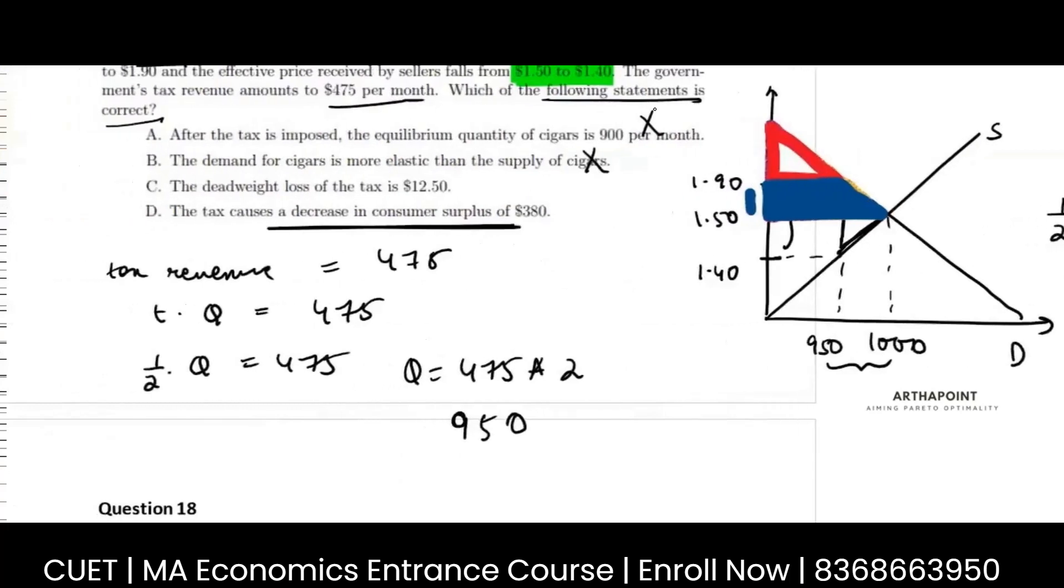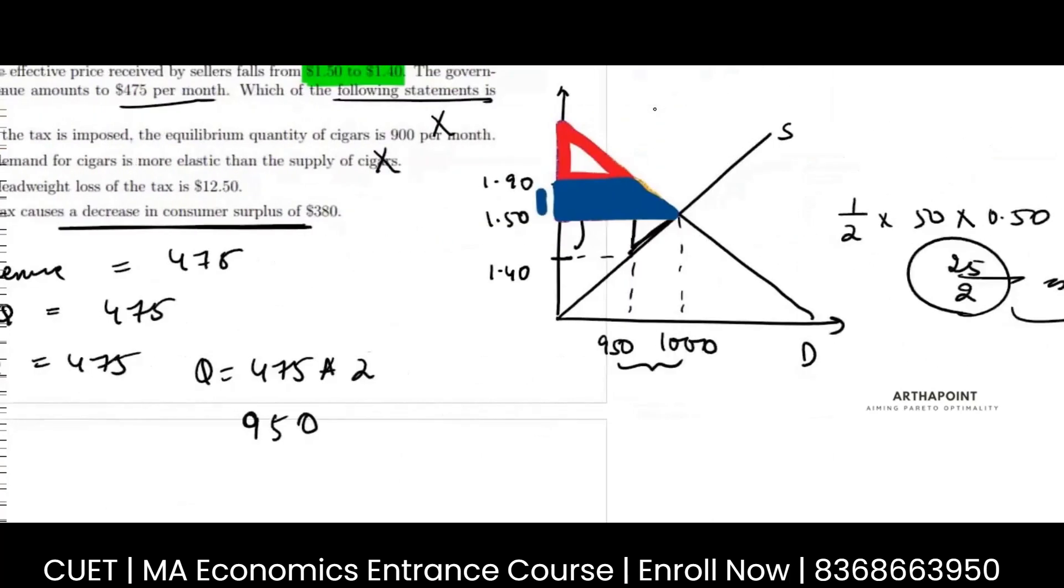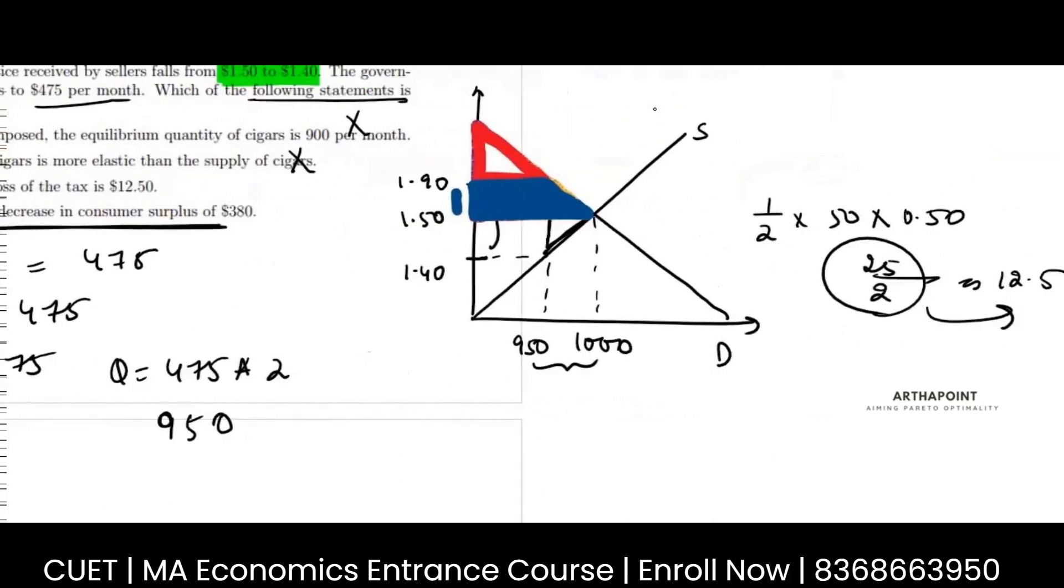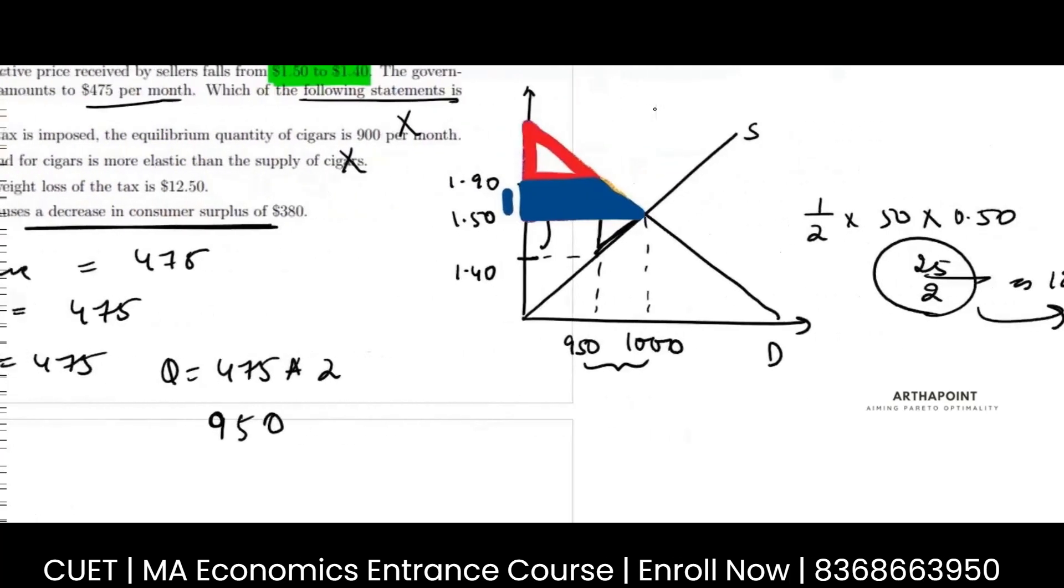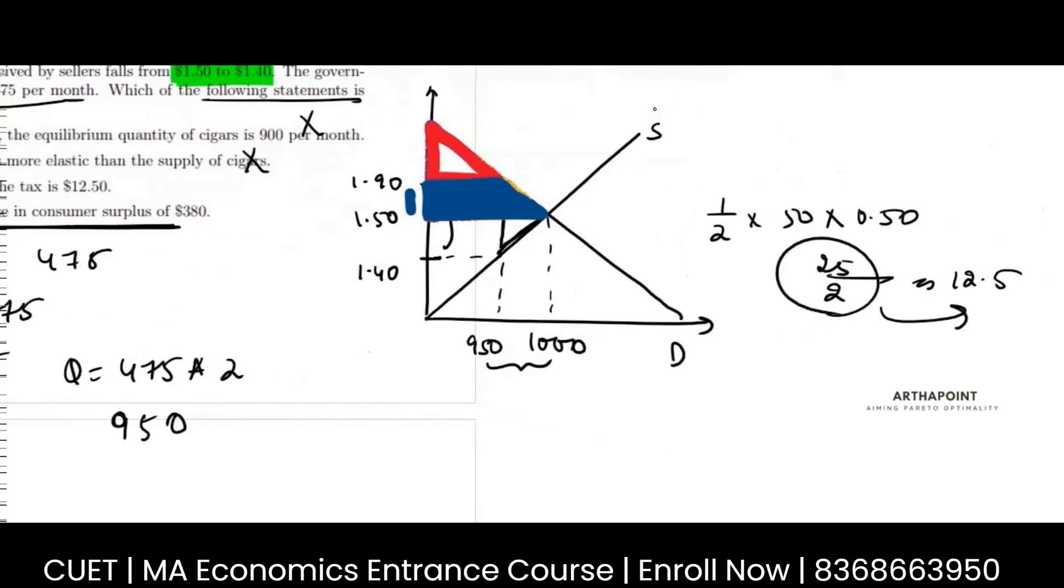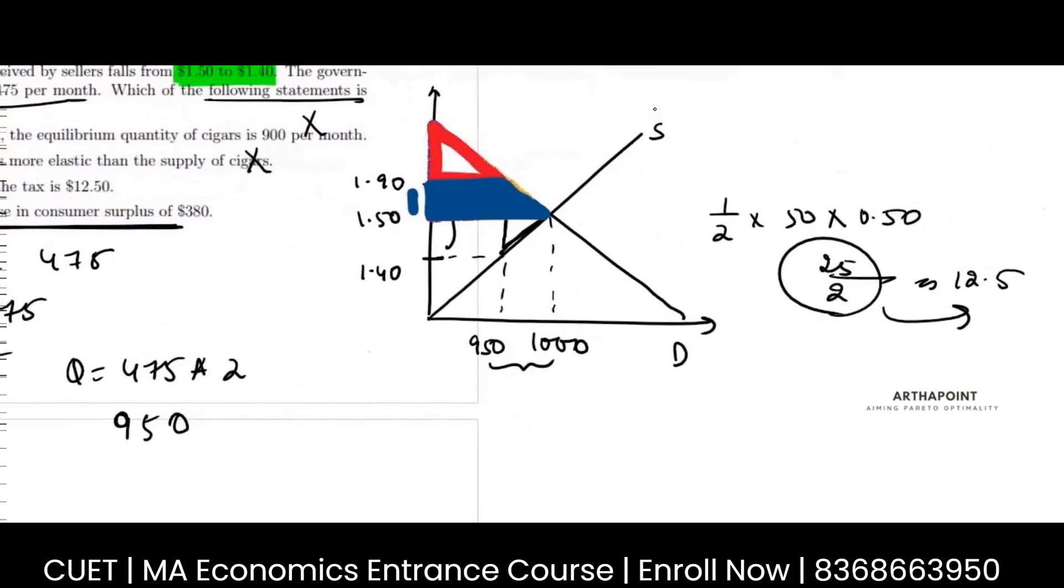Okay, so this is correct. The third option is correct, but let me just tell you the fourth option also. So here you have to find the decrease in the consumer surplus, right? So this blue area is the decrease in the consumer surplus.